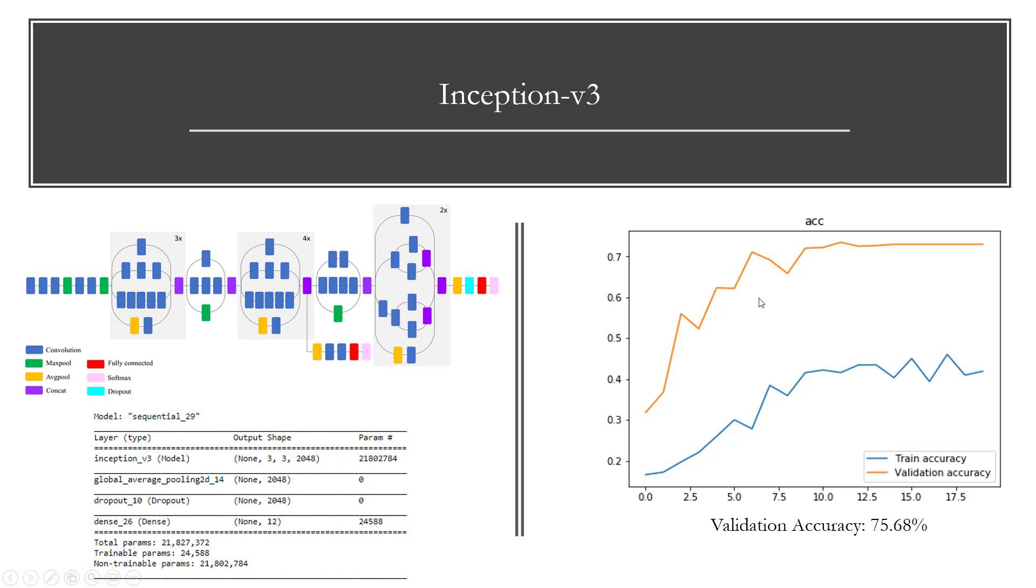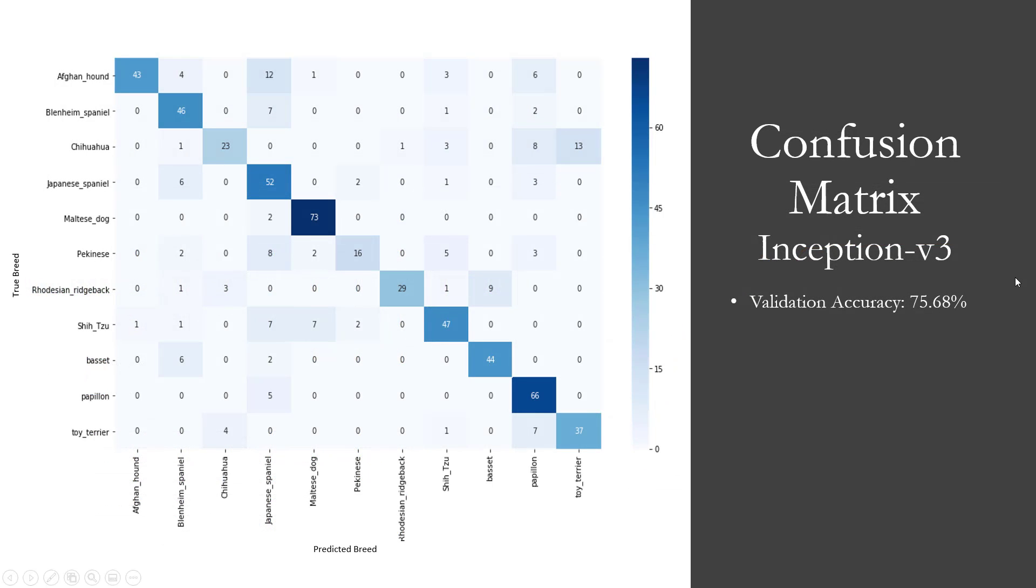Moving on to the confusion matrix of the Inception V3, which is our champion model in this case. As you see, most of the mass lies around the diagonal, which means that the images are getting predicted in the right way. There are some categories or breeds which are misclassified more often than the others. For example, the chihuahua is classified often as a toy terrier. The reason is because they look somewhat similar in body structure, and sometimes the chihuahua can also be black in color like a toy terrier.